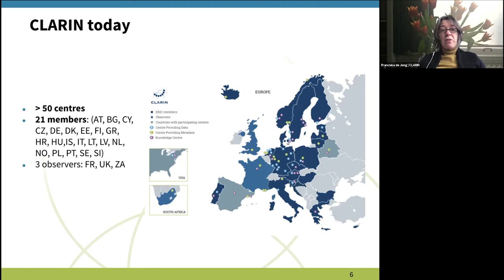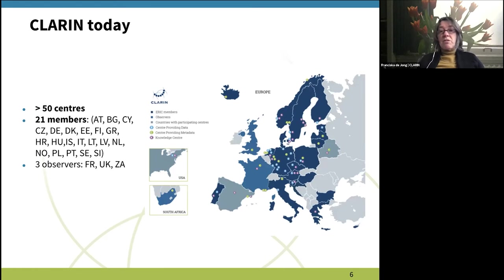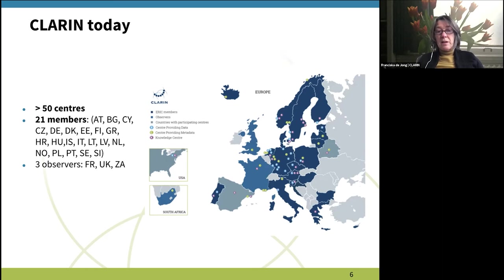Zooming in a bit more on the geographical spread and diversity: we are a consortium consisting of 21 countries and three observer countries. You see the dark-shaded countries here — these are the full members — and the light-blue ones are the observer countries, spread over the map including South Africa and part of the United States. The little dots indicate where the CLARIN centers are located.